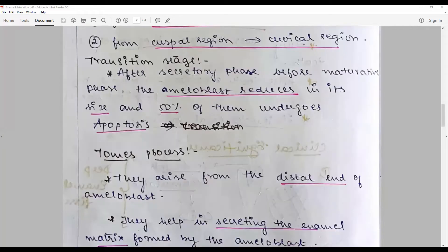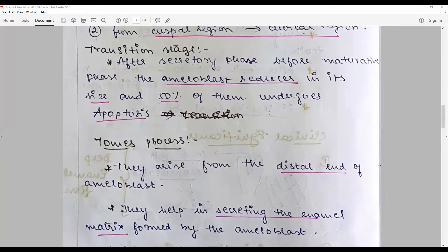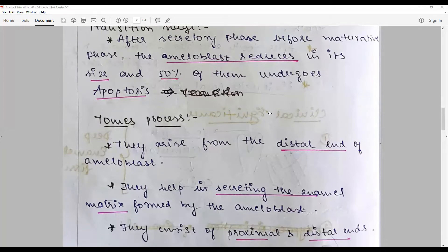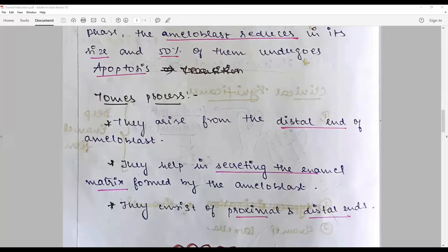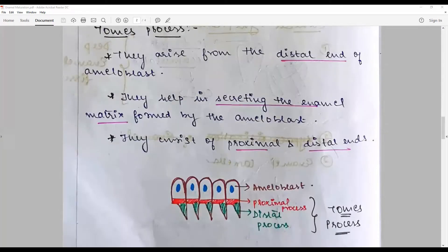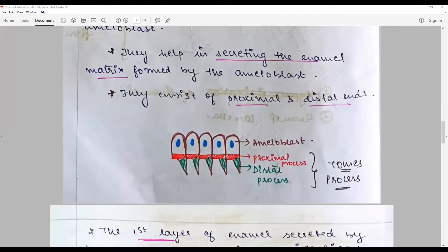There is a special structure called Tomes process that arises from the distal end of the ameloblast and they help in secreting the enamel matrix formed by the ameloblast. They consist of two ends: the proximal process and the distal process, as clearly shown in this diagram.